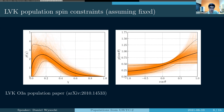If you assume a fixed spin distribution that's true for all binary black holes in the catalog — assuming a beta distribution for the spin magnitudes and a truncated Gaussian distribution for the cosine of the tilt angle — we find a pretty strong preference for low spin magnitudes with plenty of dispersion. For the tilt, we don't like things that are super sharply peaked at alignment. We're pretty consistent with having a lot of misaligned detections, but we still have pretty broad uncertainties.